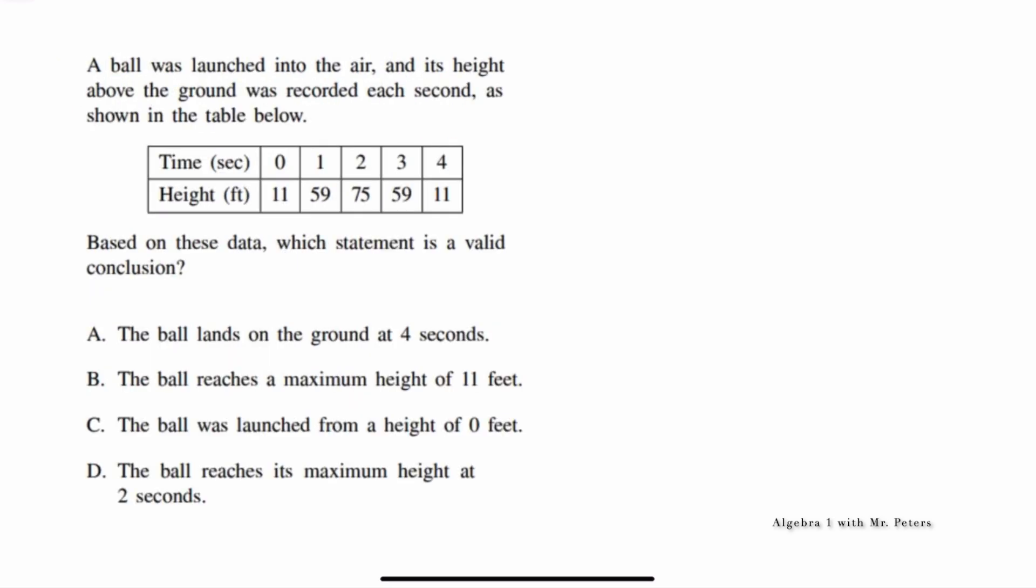We're dealing with a word problem and we have to find the correct statement. So A says that the ball lands on the ground at four seconds. Well, when we look at four seconds, the height is 11. For it to be on the ground, the height would have to be zero. So this is incorrect. The ball reaches a maximum height of 11 feet. This is incorrect because the ball reaches a height of 59 and 75 feet. When we go to answer choice C, the ball was launched from a height of zero feet. Well, when time is zero seconds, meaning the ball has not been launched, the height was 11 feet. Again, for that statement to be true, the height would have to be zero. So after using process of elimination, correct answer choice is D.